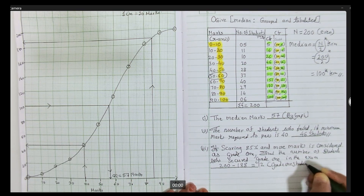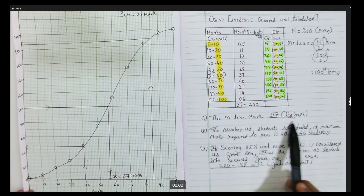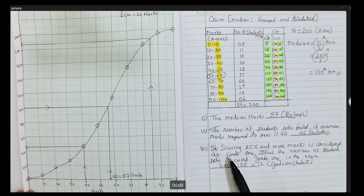So purposely I have taken a median problem and two attached questions — to find median marks, the number of students who fail, and the number of students who secure grade 1 — all using the ogive graph.